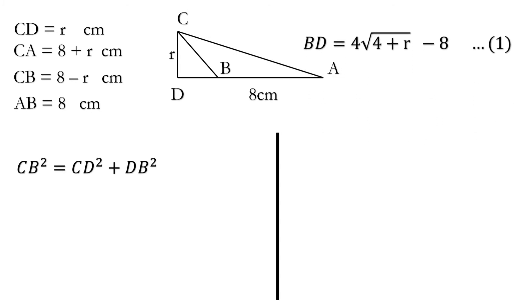Now we will try to find BD with the help of triangle CBD. We will apply Pythagoras in triangle CBD and we have CB square is equal to CD square plus DB square.